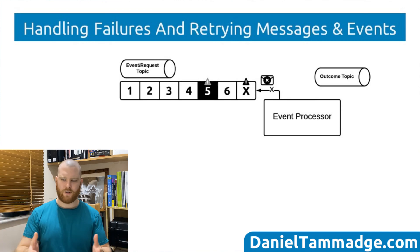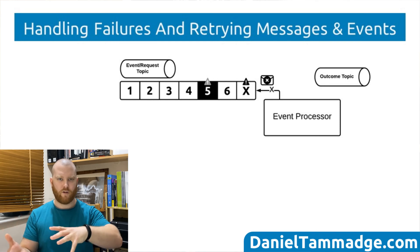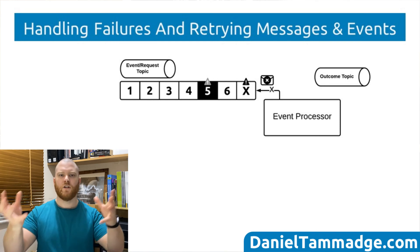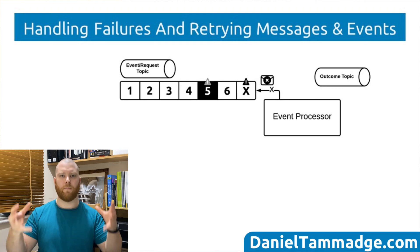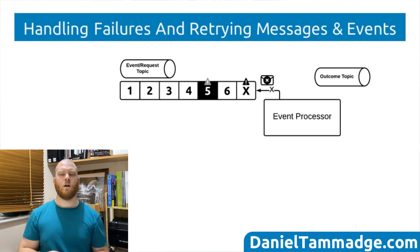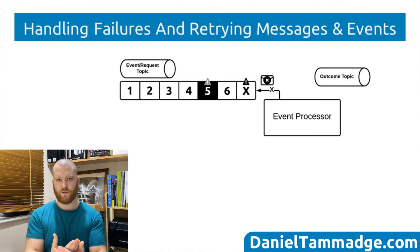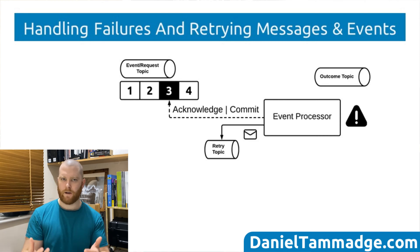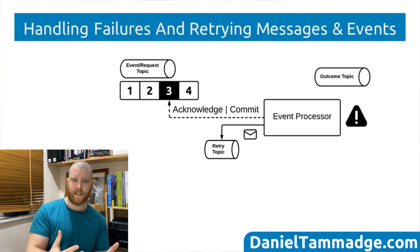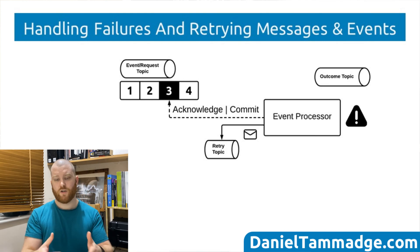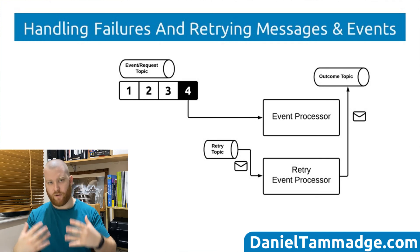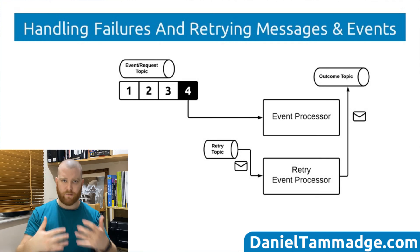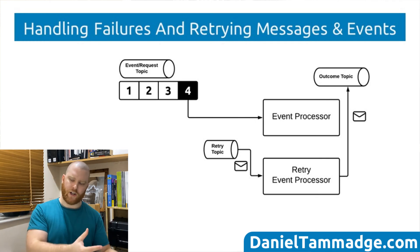But it's not a very good technique because you could actually have other event processor services consuming that event topic as well, and what you're going to be doing is polluting that event topic. A better alternative solution is to actually publish the original message — message three — to a retry topic, and then have another event processor, which could be within the same service, consuming that retry topic.